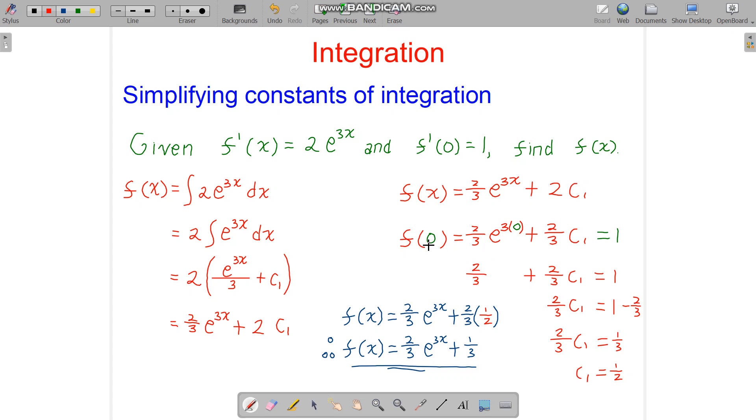So now we plug in 0. f of 0 equals 2/3 e to the power of 3 times 0, which is 1 here, so it's just 2/3, plus 2c1 equals 1. So 2c1 equals 1 minus 2/3, which is 1/3. And c1 is therefore 1/6. So c1 is 1/6.